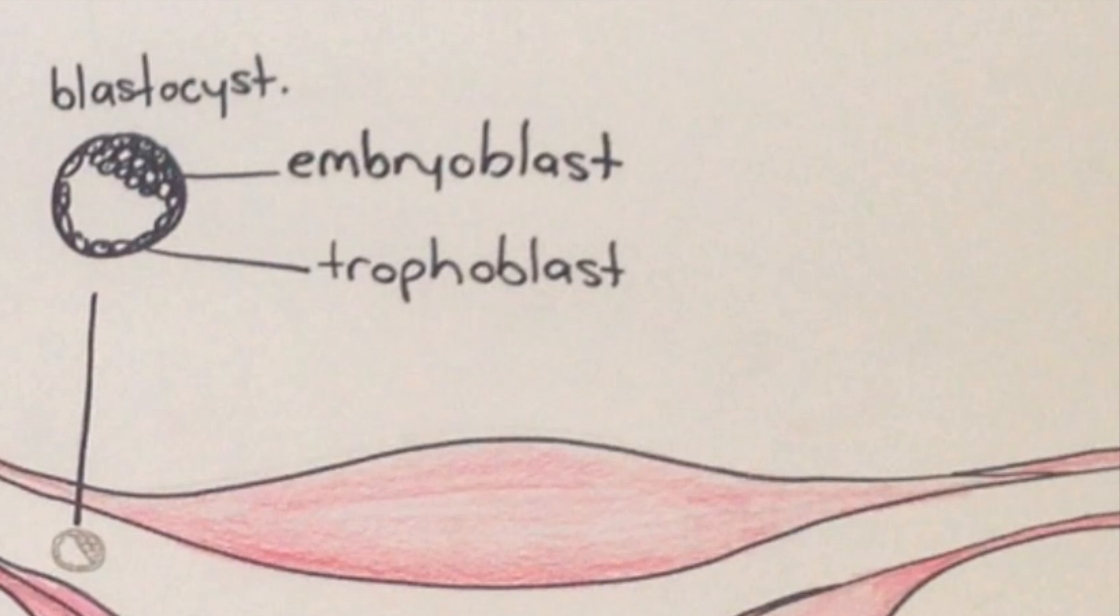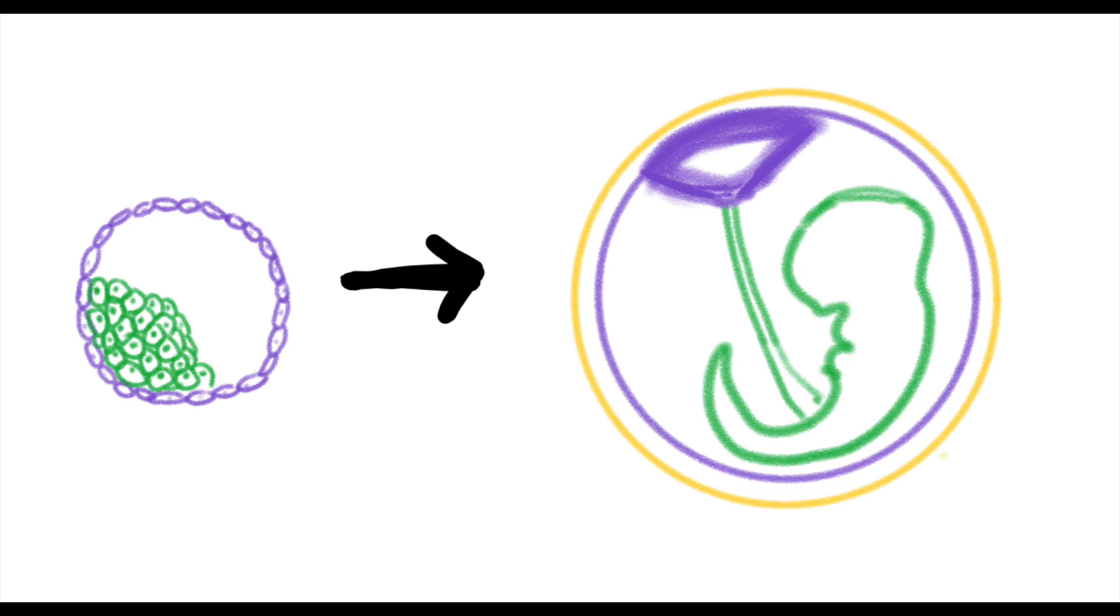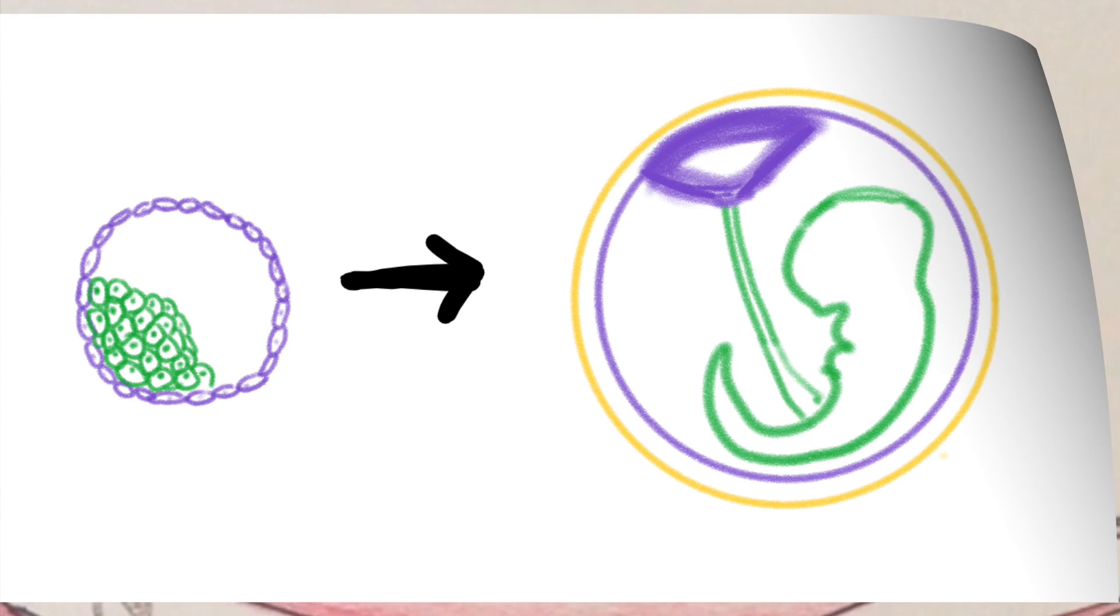The embryoblast or inner cell mass will eventually develop into the embryo. The trophoblast or outer shell will develop into the chorionic sac and the fetal portion of the placenta.